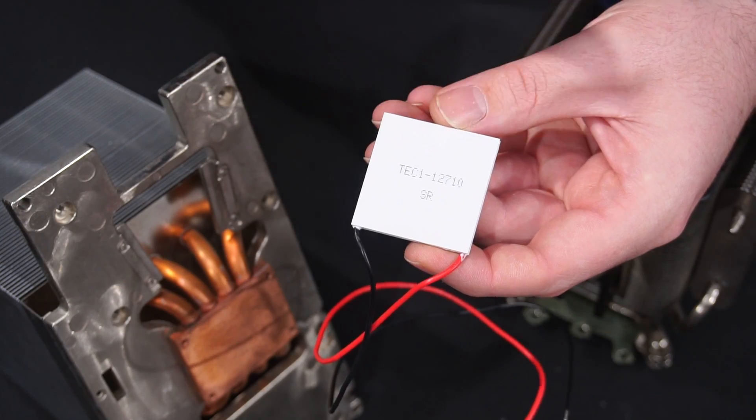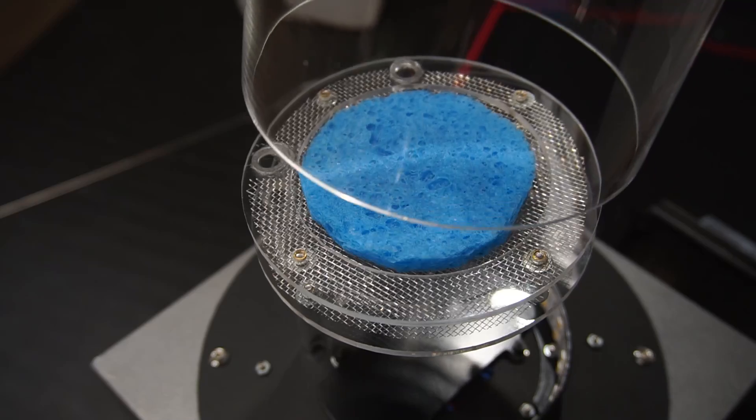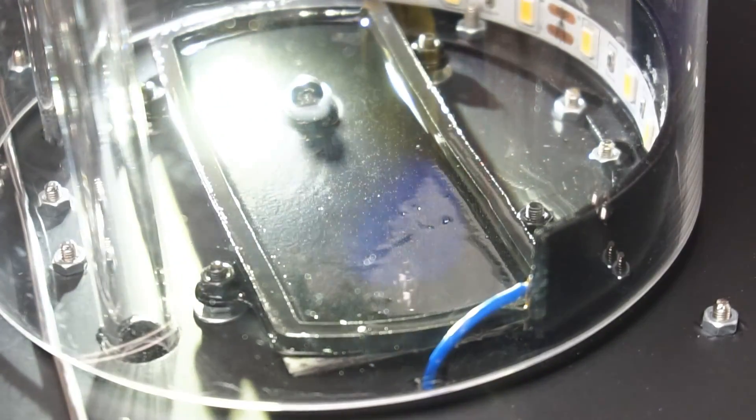Now the tutorial videos I watched online made it look really easy to build a cloud chamber. You just get some peltiers, you get a big heat sink, you supply them with power, add some alcohol in a glass dome and boom, you've got a cloud chamber and you're seeing ionizing radiation with your own eyes.